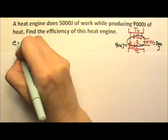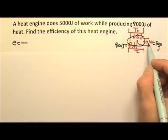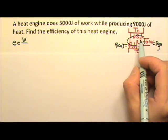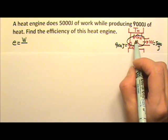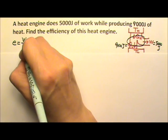The efficiency of a heat engine is defined as the work output, W, divided by the energy input, the energy we supply to the heat engine, which is QH.